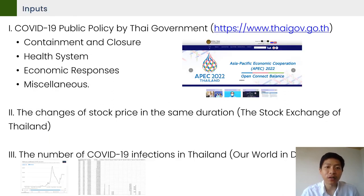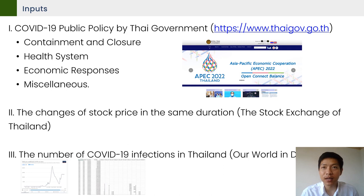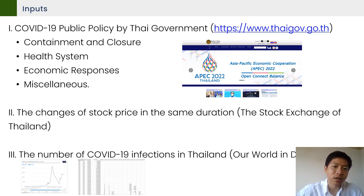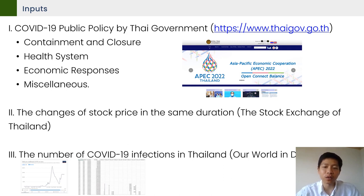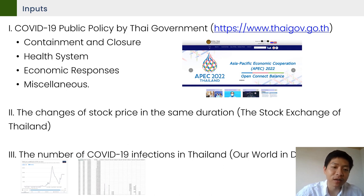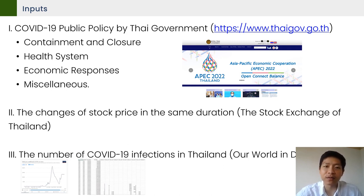For the input data, we analyze COVID-19 public policy by the Thai government. This kind of information is collected from the Thai government website and categorized by four groups: containment and closure, health system, economic responses, and miscellaneous. Second, the change of stock prices in the same duration of policy enforcement are collected from the Stock Exchange of Thailand, or SET. Thirdly, the number of daily confirmed cases in Thailand is also taken for the analysis.